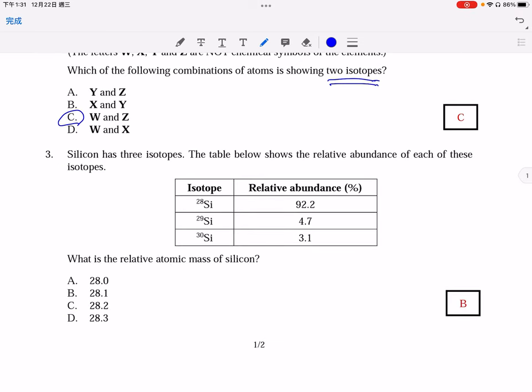For question number 3, silicon, the relative atomic mass is, the calculation is usually done by this formula. Make sure you capture all these mass numbers and their relative abundances. So the expression can be like this: 28 times its relative abundance in terms of the percentage, plus the other isotope with mass number 29 multiplied by its relative abundance in terms of percentage.